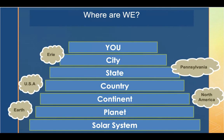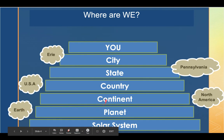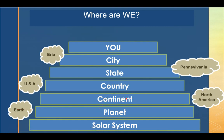Let's review the where-are-we chart. We all know it starts with our solar system. The planet we live on is earth. Our continent is North America. The country is the United States of America. Our state is Pennsylvania, and the city is Erie. And then there's you — a very important part of our neighborhoods and cities. Now would be a perfect time to learn your address. Ask your moms, dads, or grandmas, and write it down on a piece of paper.